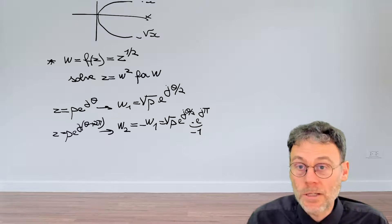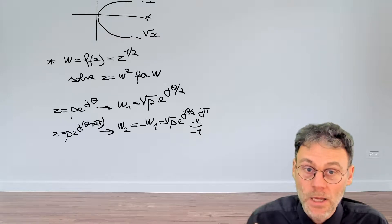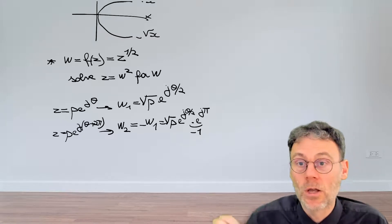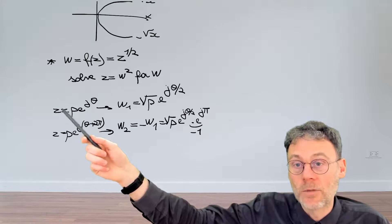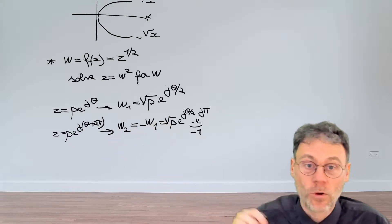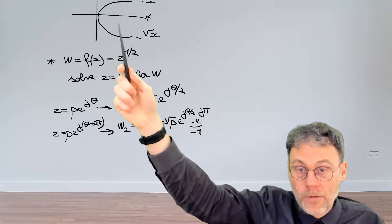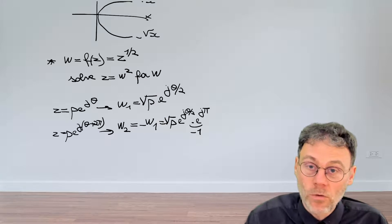But the important message here is that just like in the real-valued case, in the complex-valued case, the square root function is not single-valued. So for a single z as an input, the output w equals f of z actually gives you two possible results.